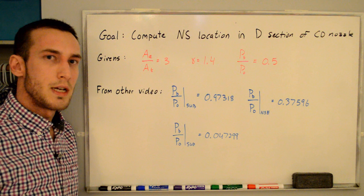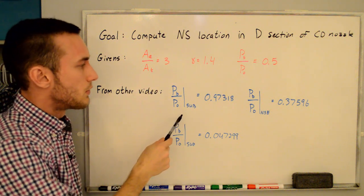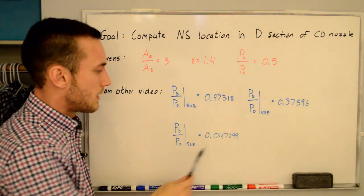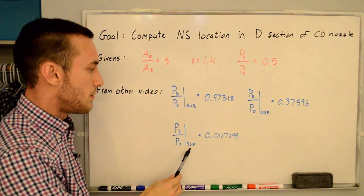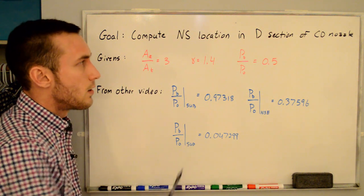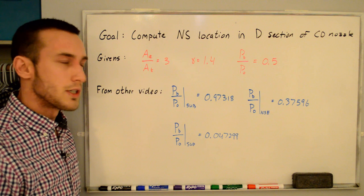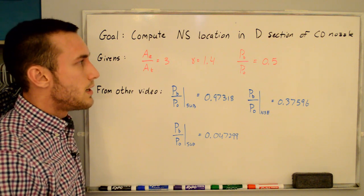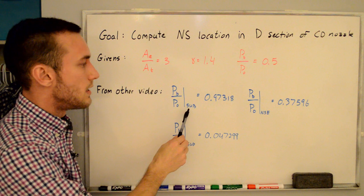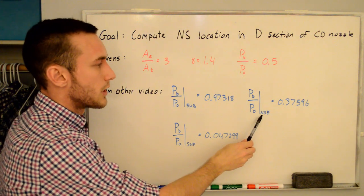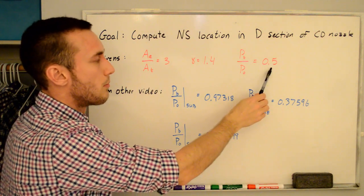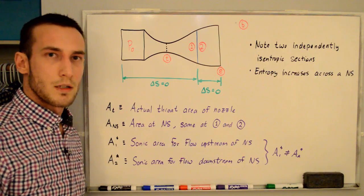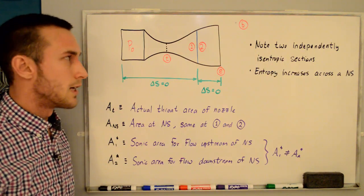From my other pressure ratio delineations video we got these values for the subsonic isentropic, normal shock at the exit, and the isentropic supersonic PB over P-naughts. We know from that video that in order to get a normal shock in the diverging section of the nozzle we need the PB over P-naught to be in between the subsonic isentropic and the normal shock at the exit, which is why I've chosen 0.5.